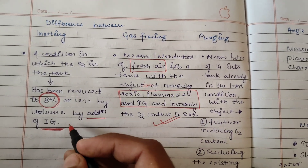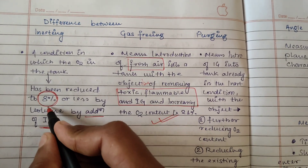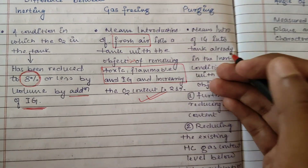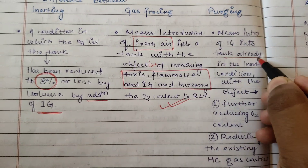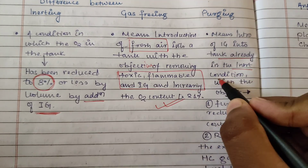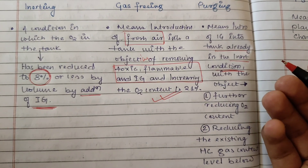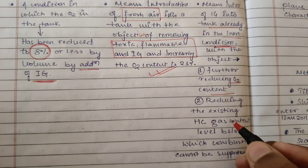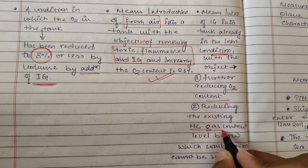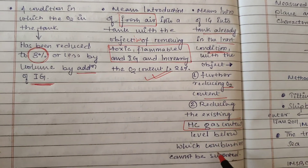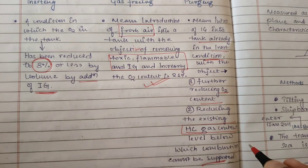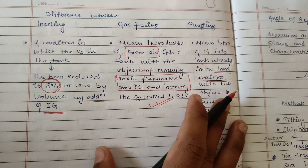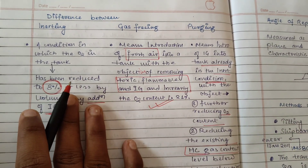So when we want to increase the oxygen content we need to do gas freeing, and when we need to decrease the oxygen content then we need to do inerting. Now purging means the introduction of inert gas into a tank which is already inerted. When a tank is already in an inert condition and we want to further reduce the oxygen content and also reduce the hydrocarbon gas content below the level at which there is no combustion.